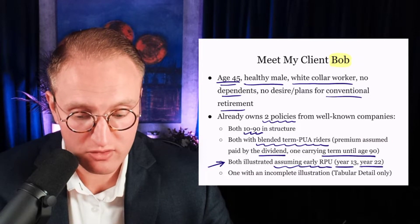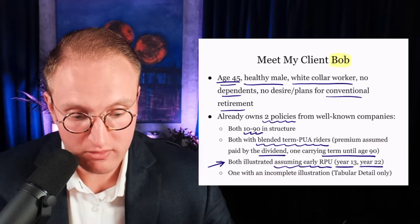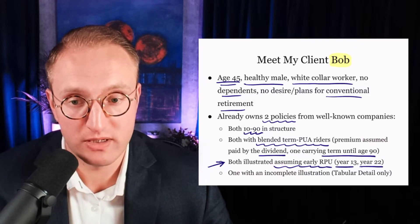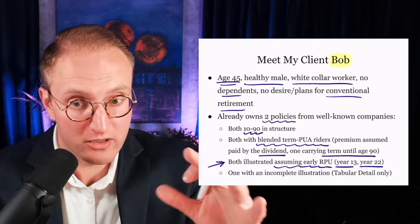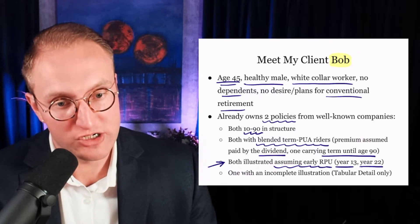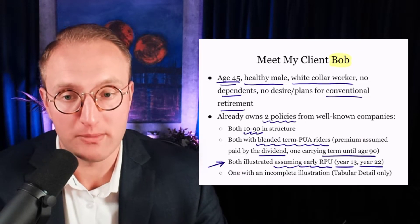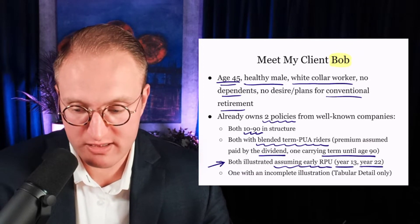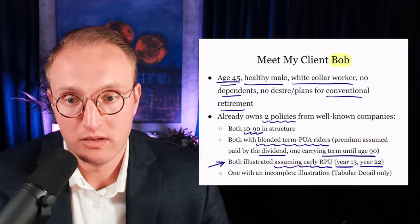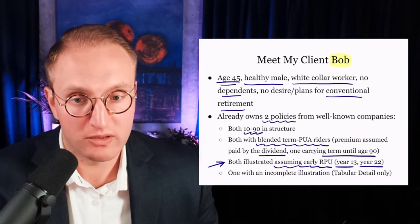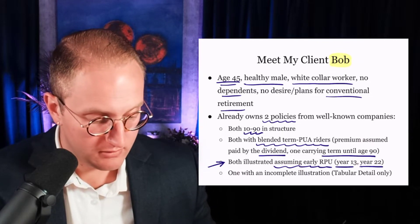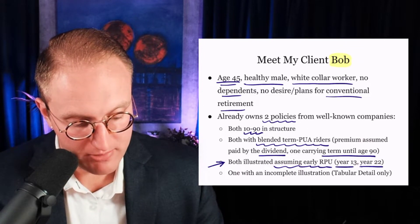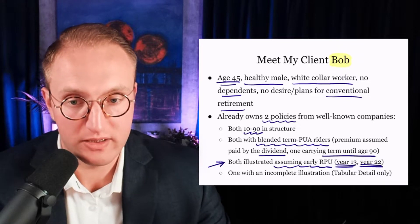Remember our discussion of non-forfeiture options — RPU is the least efficient, most restrictive. And that was the assumption on these illustrations. Now, granted, on illustrations you can show no non-forfeiture options, and then the agent often has the ability to assume the use of a non-forfeiture option, and that'll appear in what's called a supplemental illustration in the same document. But often when that is done, the plan is to RPU at, in the case of one policy year 13 and in the case of another year 22.